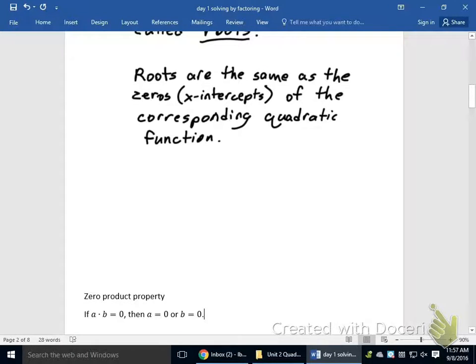We use those in unit one. You'll also see the zero product property used today. That's if factors a and b have a product of zero, then either a has to equal zero or b will have to equal zero. And we'll use that a decent amount today.